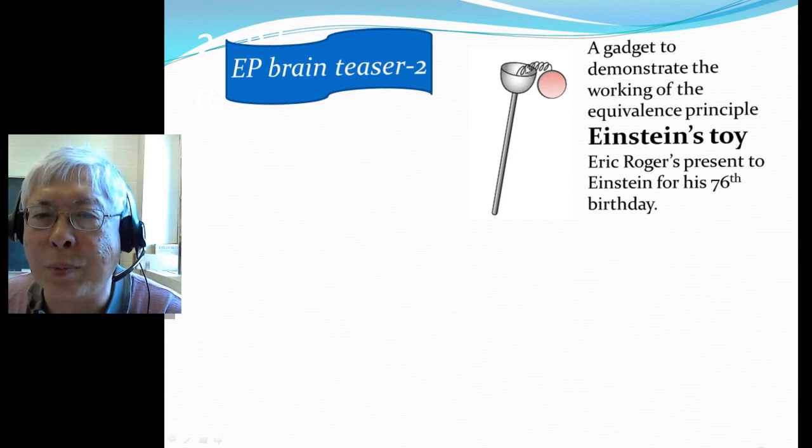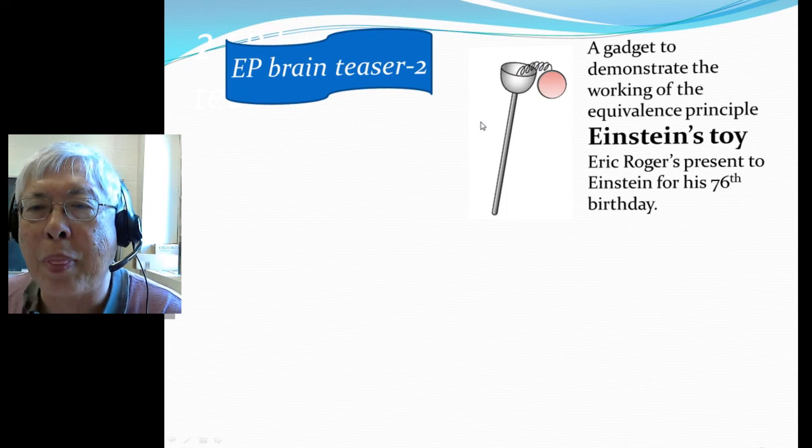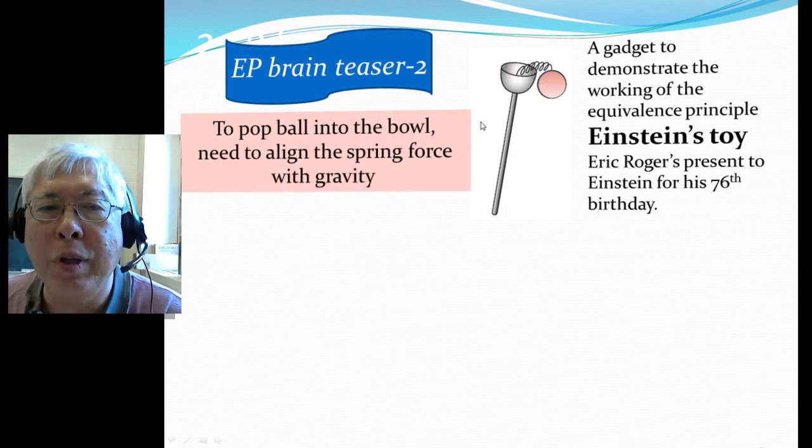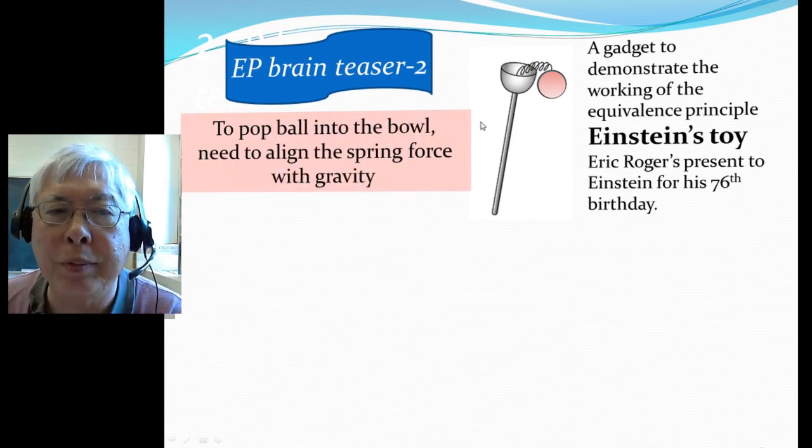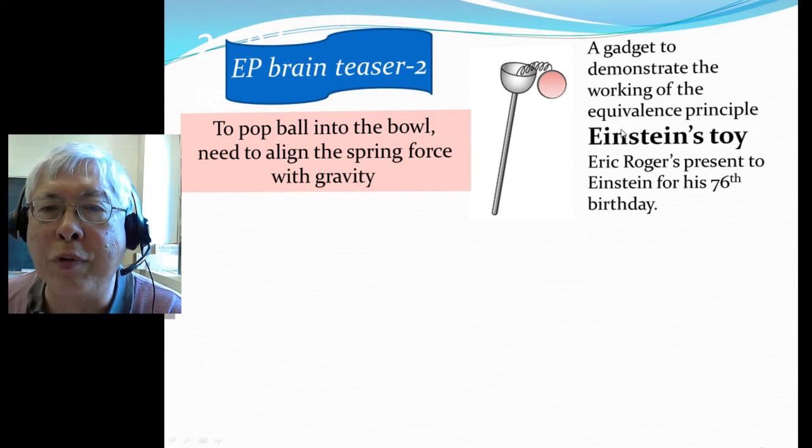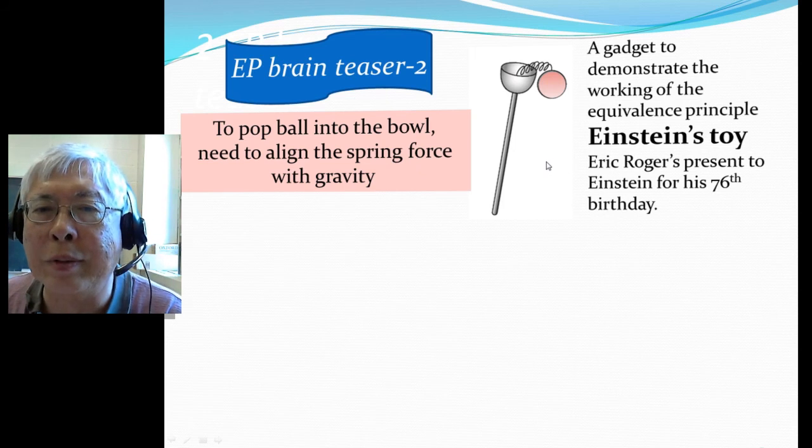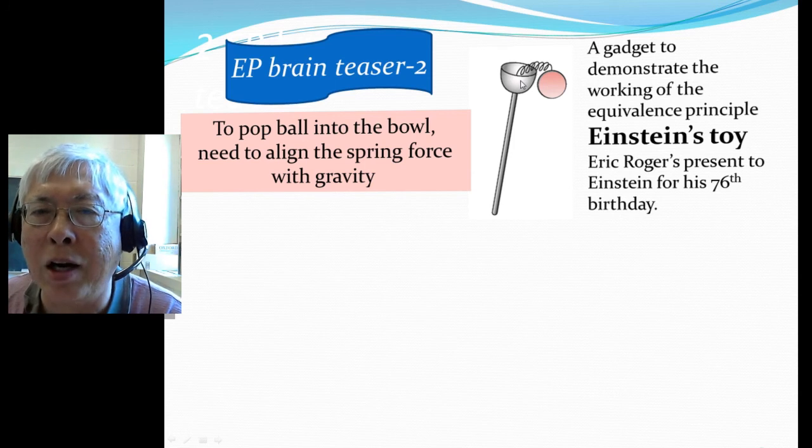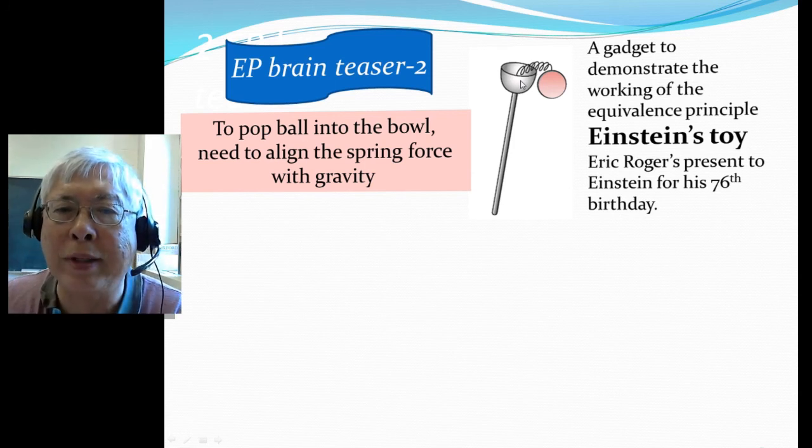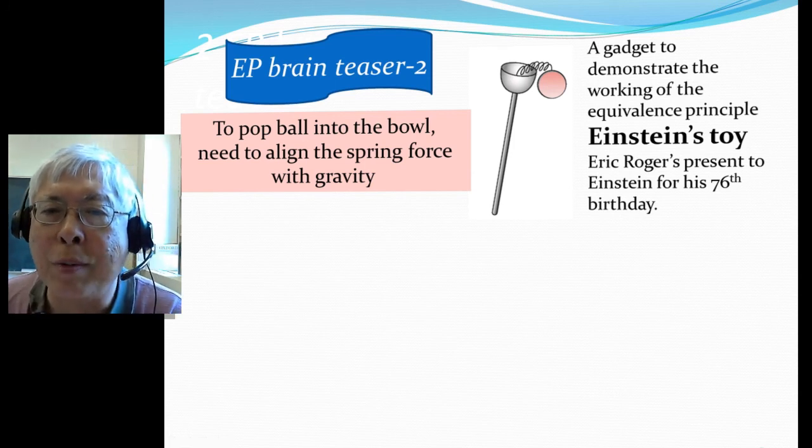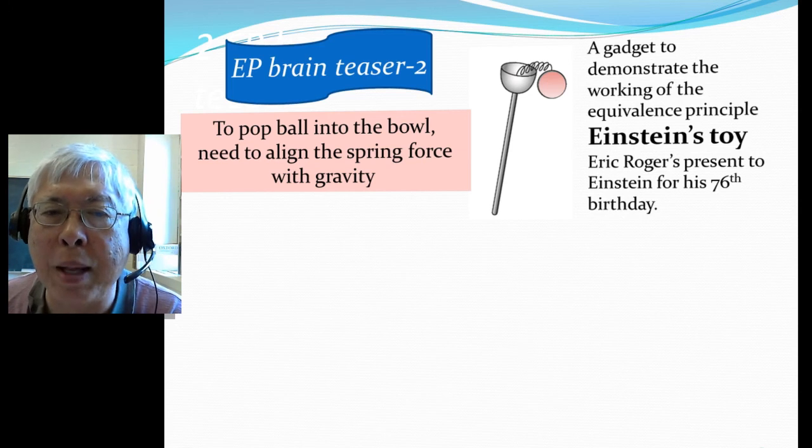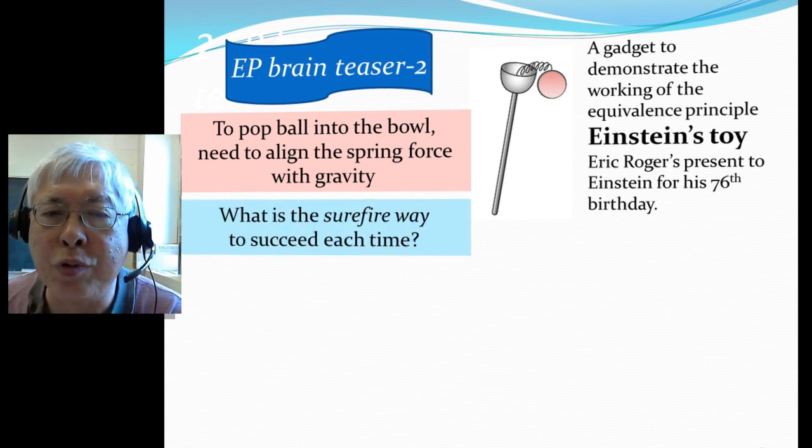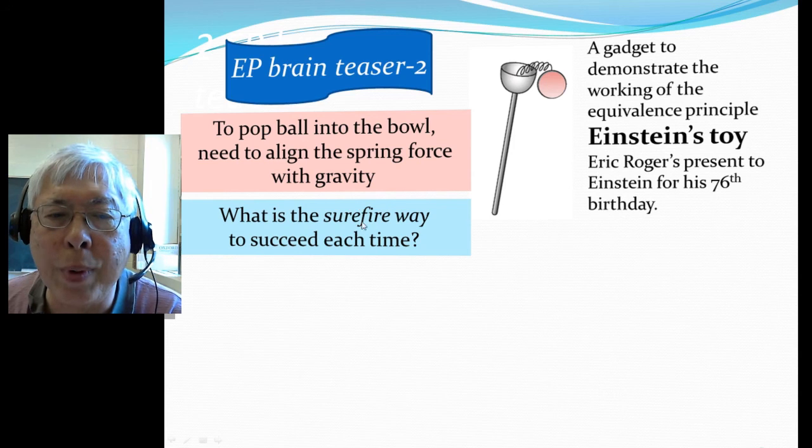The game is: how do you pop this ball into the bowl? Normally of course you know the two forces are the spring force and also gravity. The challenge is that I want you to be able to pop it back even though it's not hard. Normally you have to align these two forces. The question is: how can you pop it back to the bowl for sure, a sure way to succeed each time so that you can pop it back?